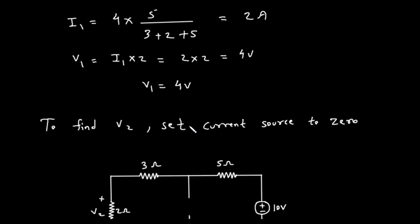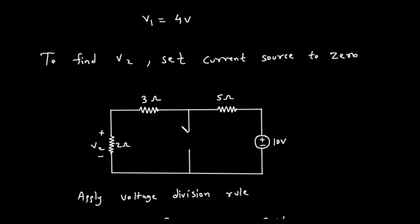Step 2, find V2, effect of the voltage source. Next, to find V2, we consider only the 10 volt voltage source and set the 4 ampere current source to zero. Setting a current source to zero means replacing it with an open circuit, which is a break in the wire.